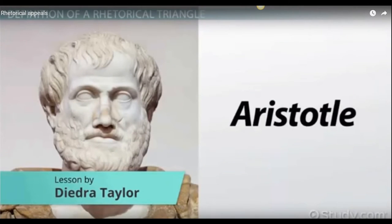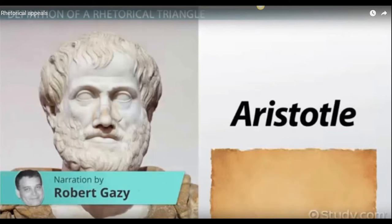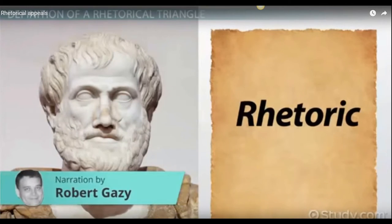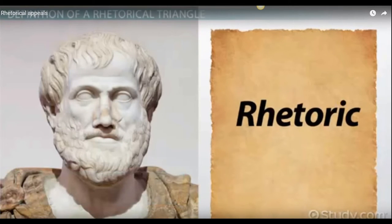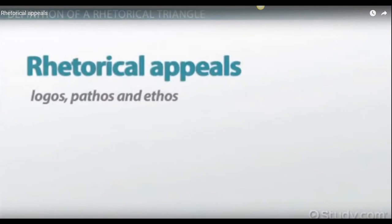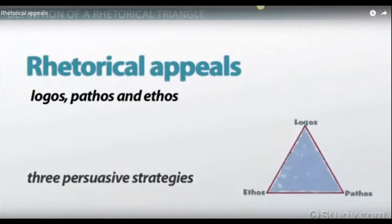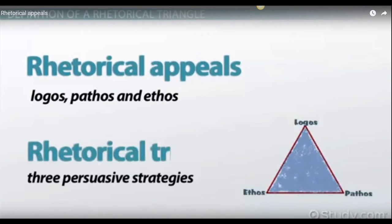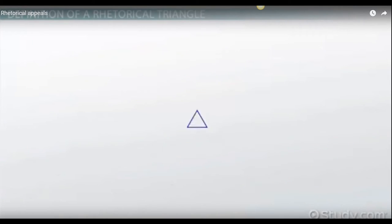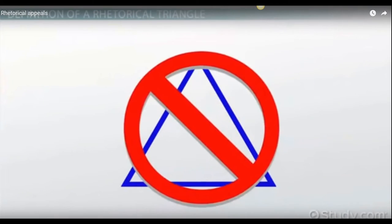Aristotle wrote one of the first great treatises on rhetoric, aptly titled Rhetoric. This treatise was written in the 4th century BCE, and it outlines the three main rhetorical appeals: logos, pathos, and ethos. These three persuasive strategies make up the rhetorical triangle. Aristotle himself did not use the image of a triangle, but he did outline the effective uses of these three modes of persuasion.